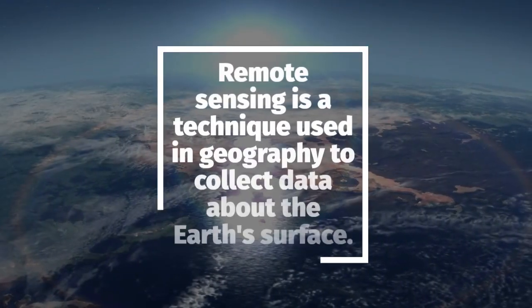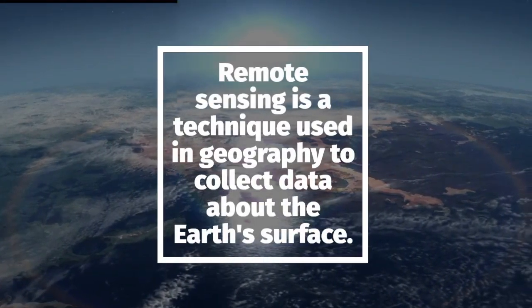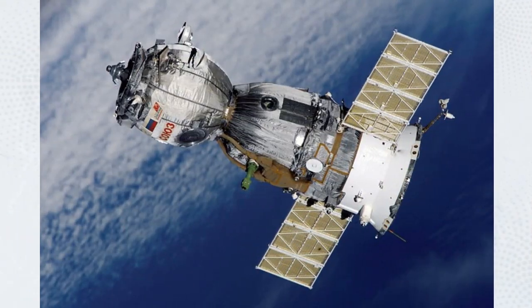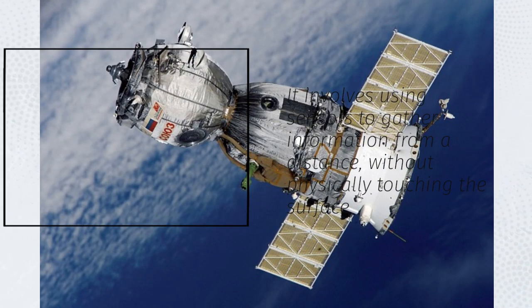Remote sensing is a technique used in geography to collect data about the Earth's surface. It involves using sensors to gather information from a distance, without physically touching the surface.